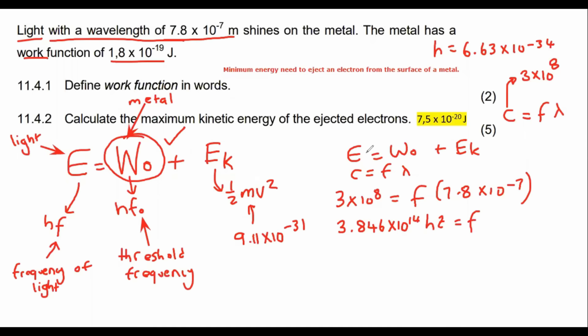Now we can say, coming back to this formula up here, HF equals to W zero plus Eₖ. So then we can say Planck's constant 6.63 times 10 to the minus 34 times by the frequency that we just calculated equals to the work function, which is 1.8 times 10 to the minus 19, plus the kinetic energy which we are trying to find.